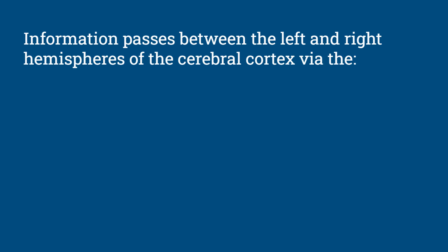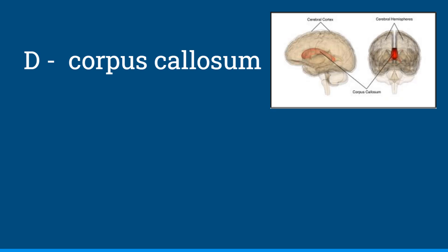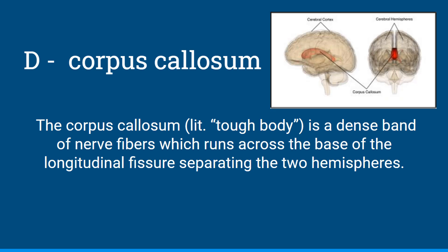Question 7: Information passes between the left and right hemispheres of the cerebral cortex via the — thalamus, the pons, the cerebellum, the corpus callosum, or the hippocampus? The answer is D, the corpus callosum. This literally means 'tough body,' and it's a dense band of nerve fibers which runs across the base of the longitudinal fissure — the gap separating the left and right hemispheres of the cortex.